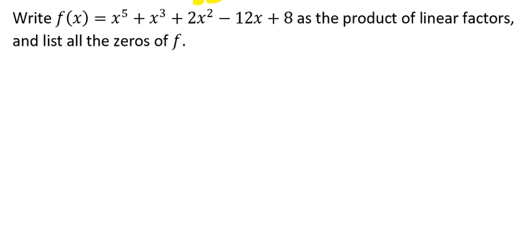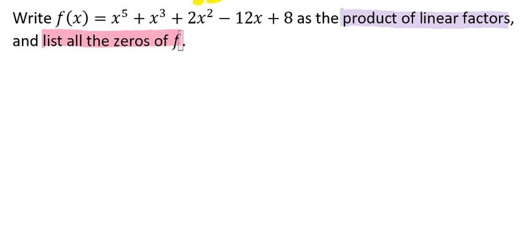In this video, we're going to be writing f of x equals x to the 5th plus x to the 3rd plus 2x squared minus 12x plus 8 as the product of linear factors, and then we're going to list all of the zeros of f.